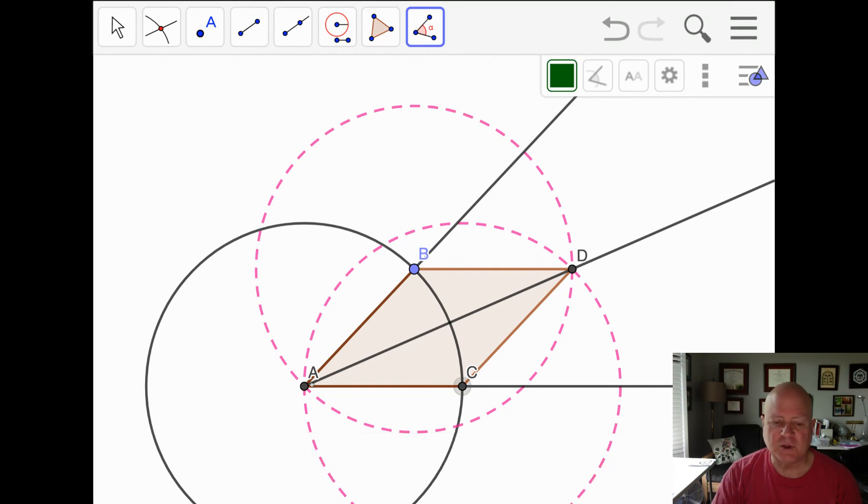I'll use my measurement tool to measure CAD, which is approximately 23 degrees. And then DAB, which is also 23 degrees.